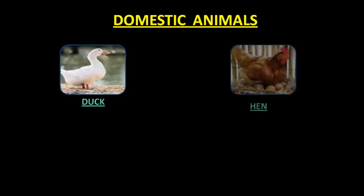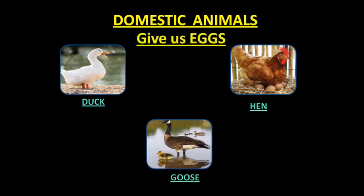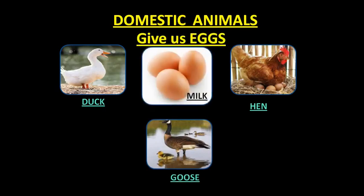Next, domestic animals like duck, hen, and goose give us eggs. So children, we get eggs from the domestic animals like duck, hen, and goose.